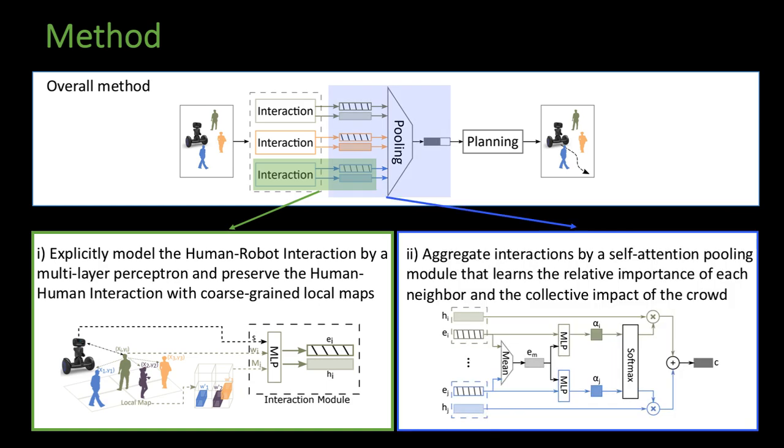To handle a variable number of humans, our model aggregates the interaction embeddings by a self-attention pooling module that learns the relative importance of each neighbor and the collective impact of the crowd in a data-driven fashion.